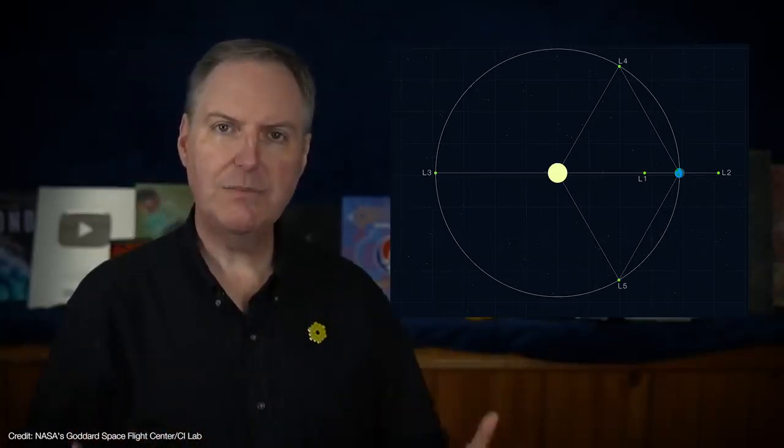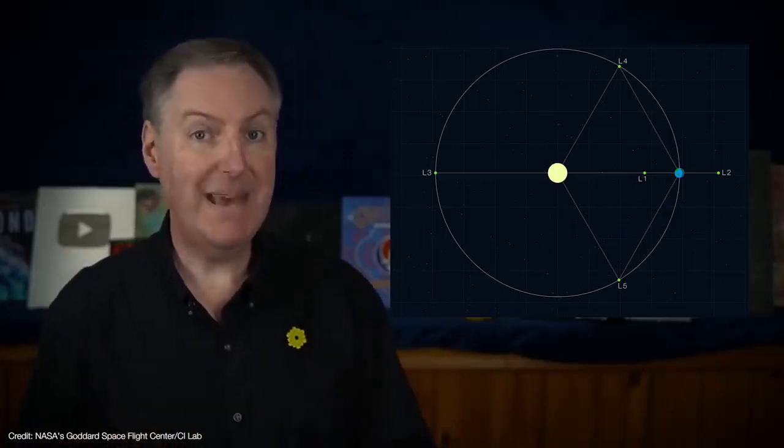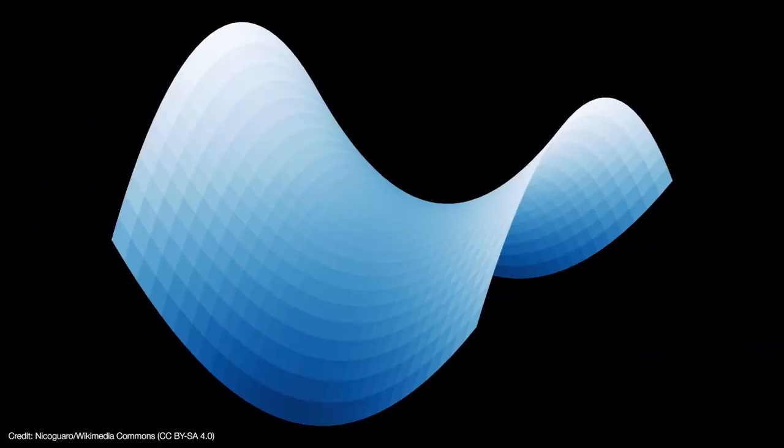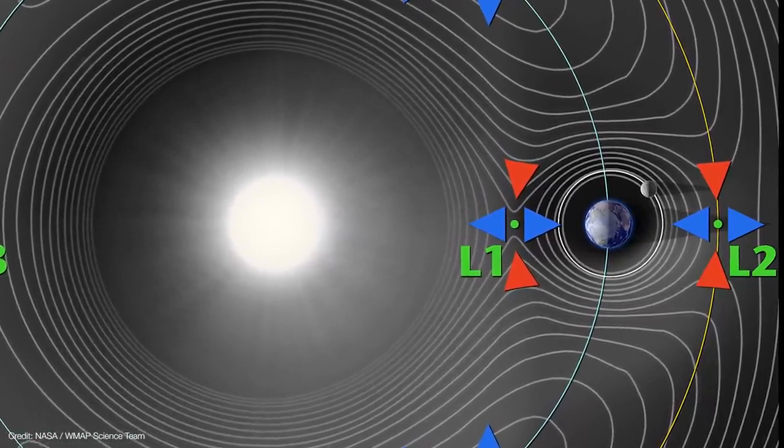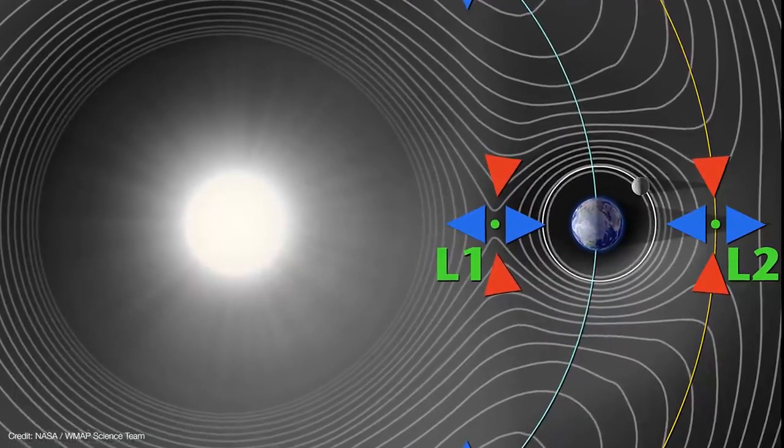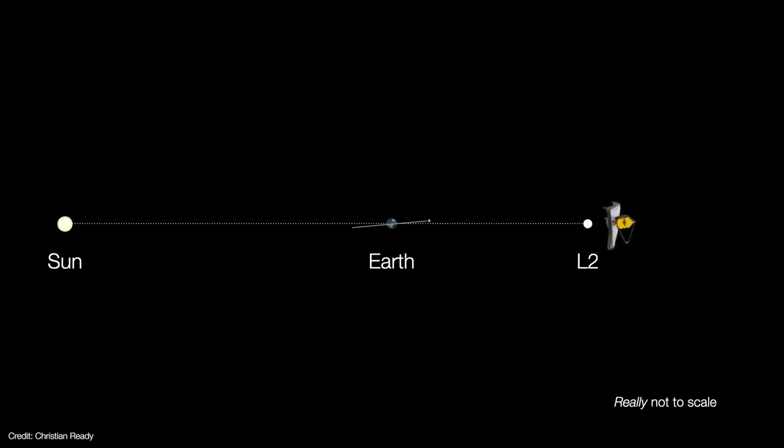But the other caveat is that the Lagrangian points are at best described as metastable, especially the first three points. To understand what I mean, imagine a saddle that's perfectly smooth and frictionless. Now imagine trying to balance a marble in the very center of the saddle. It's theoretically possible, but as a practical matter, it's extremely hard to do. The L2 point is a lot like this. An object moving perpendicular to the Sun-Earth line falls toward the center, but then it either falls toward or away from Earth. Now if Webb falls away from Earth, it's really in trouble because the only way to bring it back would be to turn it around and thrust back. But that would cause the telescope to suddenly warm up, all of the structures would expand, glues and adhesives would melt, and the mission would be over. And that's bad.